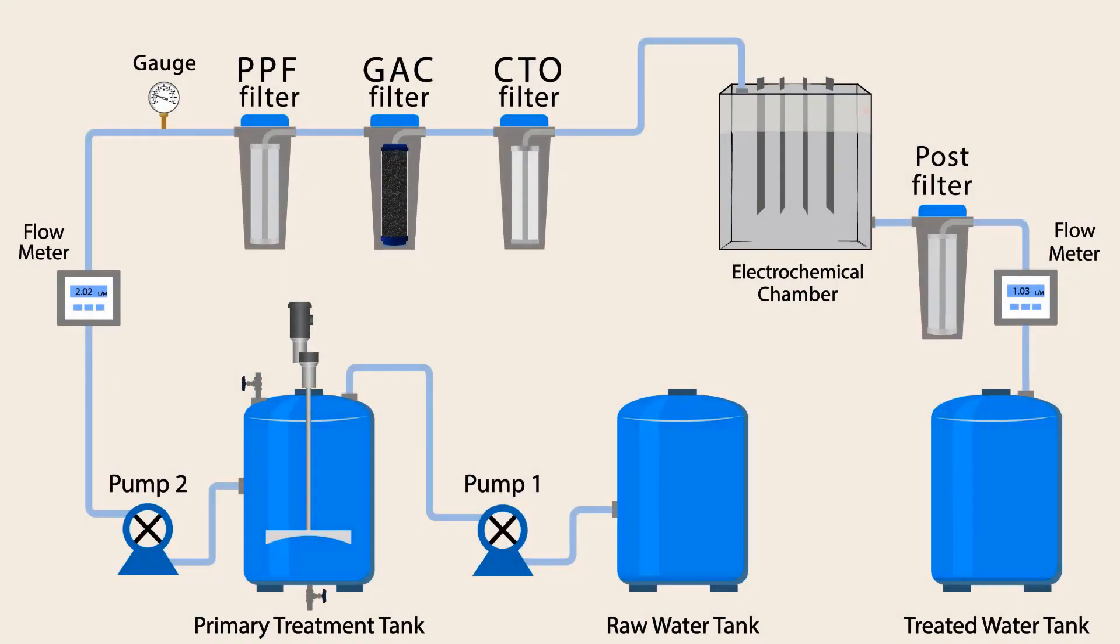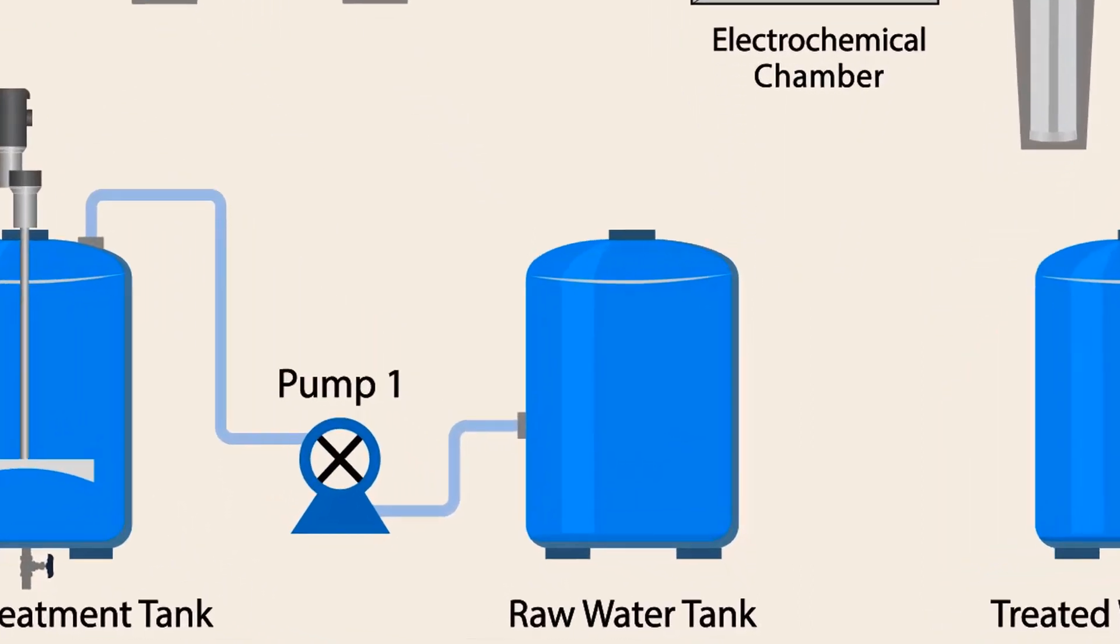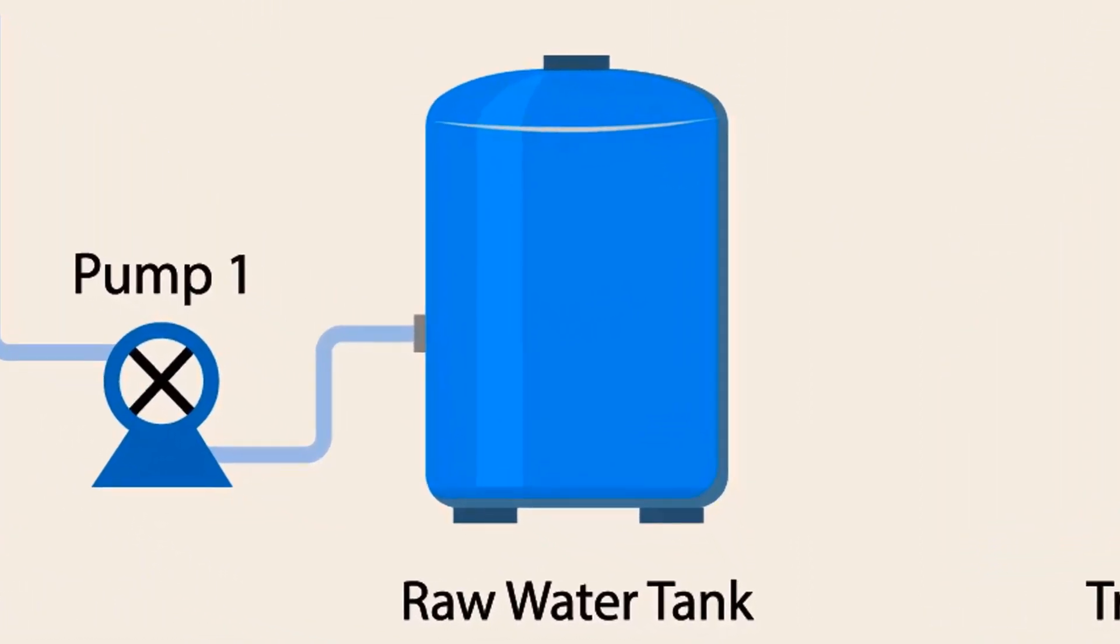This plant will make the canal and lake water drinkable. Let's see how we will make it. This is a raw water tank. In this tank we can have flood water, canal water, or lake water.